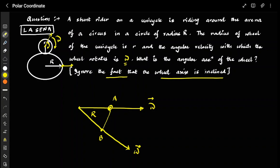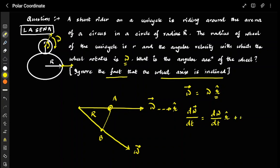Now let me solve this. I can write the vector omega as its magnitude ω times r̂ (r-cap), where r̂ is the radial direction — just as we do in circular motion. So: dω/dt gives the change in the angular velocity vector.